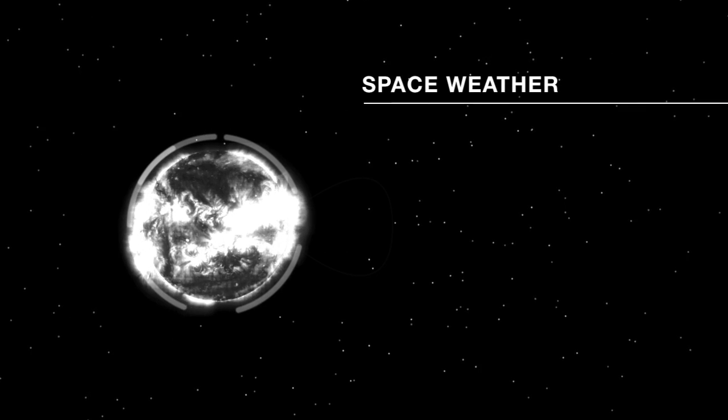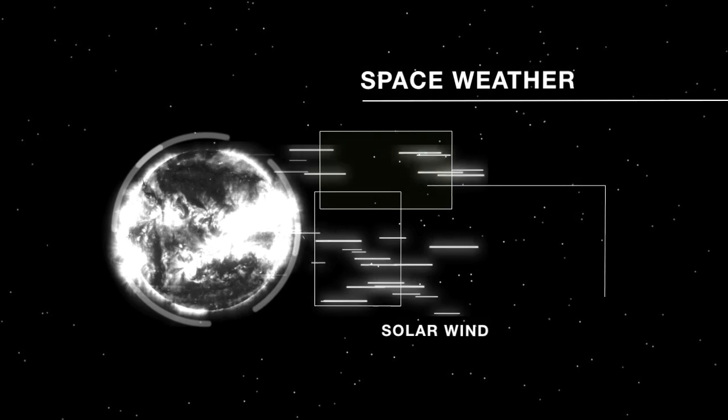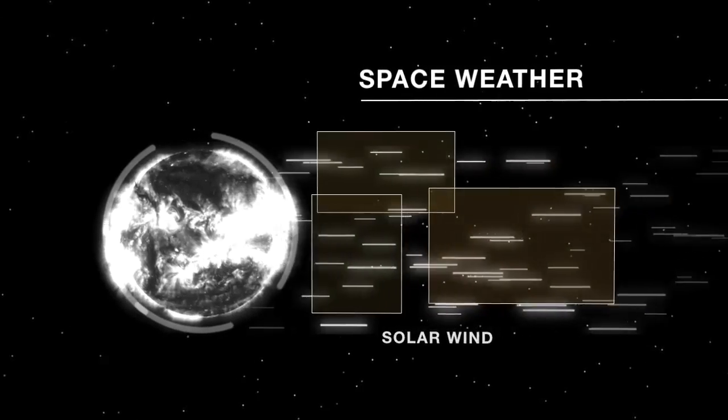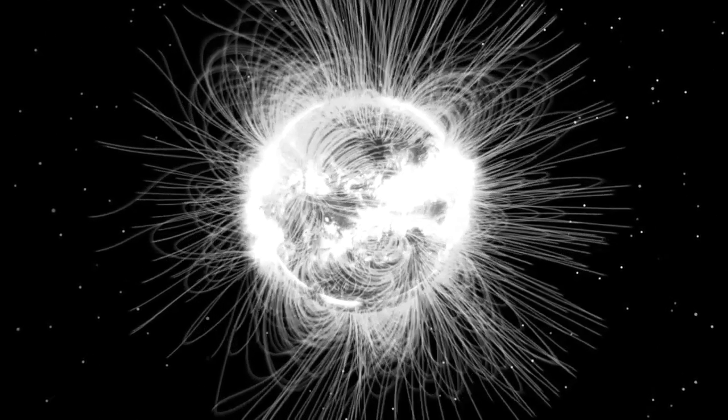The sun puts out what we call space weather. Space weather causes problems with our satellites, our astronauts, our communication systems here on Earth, and our navigation systems. We need to know more about how the sun works, where the magnetic field of the sun comes from, and how that magnetic field is converted into space weather.